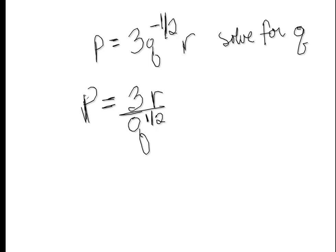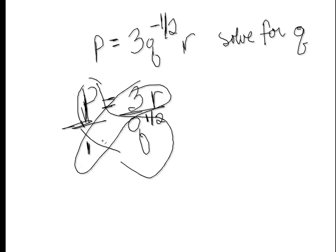The next thing I'm going to do is cross multiply. I'm going to cross multiply because the whole goal here is to get Q by itself. You can think of P as P over 1. Same thing. So when I cross multiply, I end up with P times Q to the one-half equal to 3R.